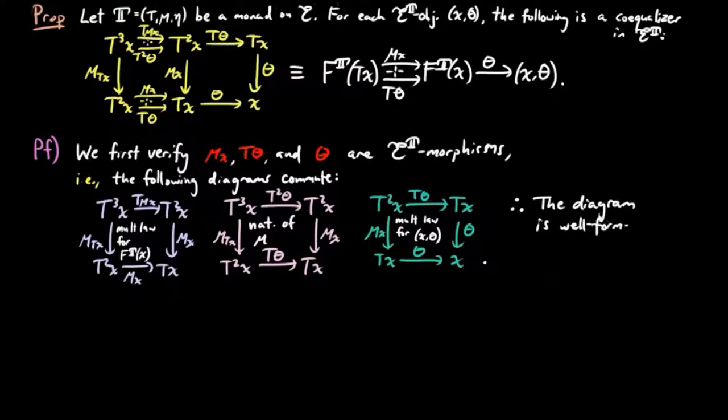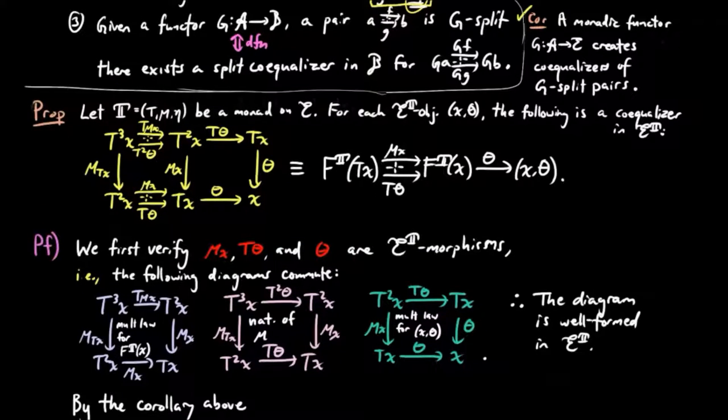Therefore, the diagram above is well formed in the Eilenberg-Moore category, and we can proceed to show that it is a co-equalizer diagram.